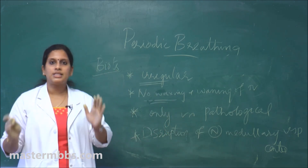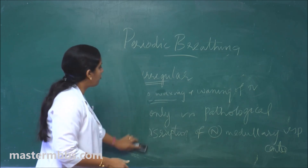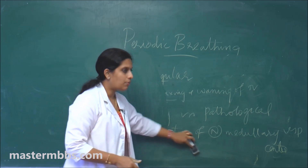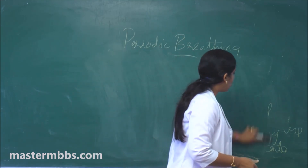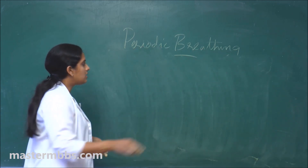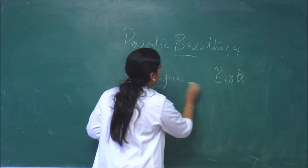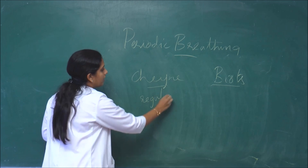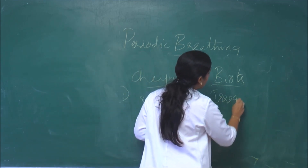Comparing Cheyne-Stokes breathing and Biot's breathing: both are types of periodic breathing. Periodic breathing is defined as the alternate period of respiratory activity and apnea. In Cheyne-Stokes breathing, this alternate activity and apnea occurs at regular intervals, whereas in Biot's breathing it occurs at irregular intervals.